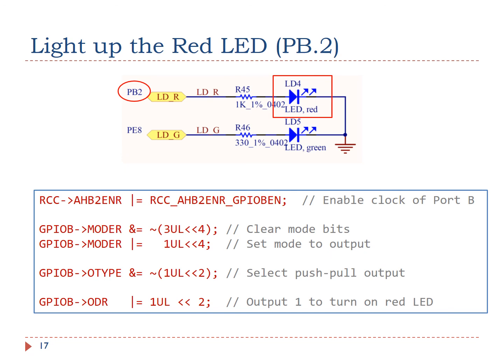Next, we select push-pull output, instead of open-drain output. Finally, we set bit 2 of the output data register to light up the red LED.